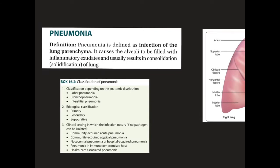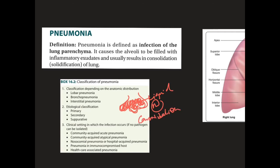Coming to today's topic — pneumonia — which is basically called the infection of the lung parenchyma. The acini in the body become infected by bacilli, which fill the alveoli with liquid, pus, or neutrophils instead of air. When air is replaced by this fluid and neutrophils filling the acini, it is called consolidation.